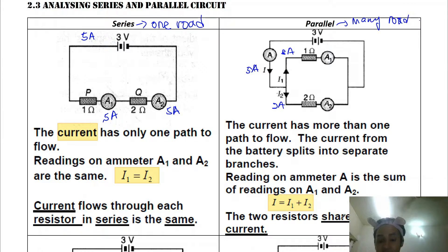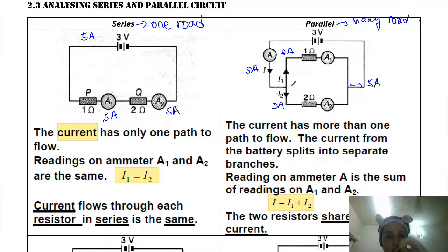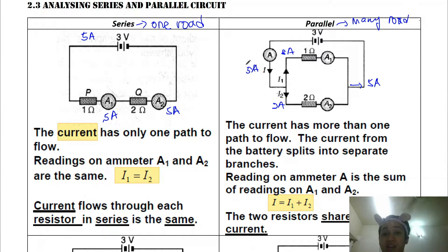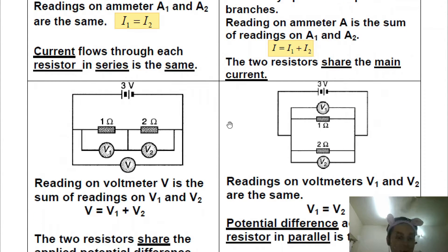In a parallel circuit, the two resistors share the main current. When the current reaches the junction it splits, and after passing through the branches it combines again, so you get back the main current. For example, 5 amperes comes in, splits, and recombines to give 5 amperes at the output. The current can never exceed the main current — that would not be logical.